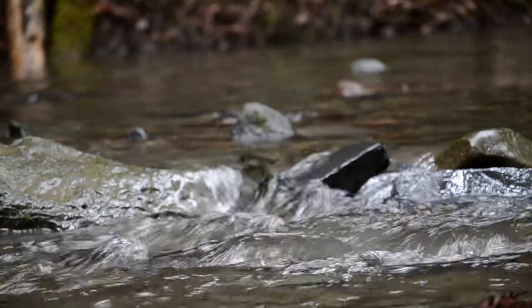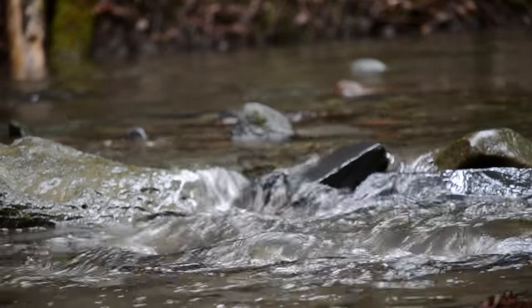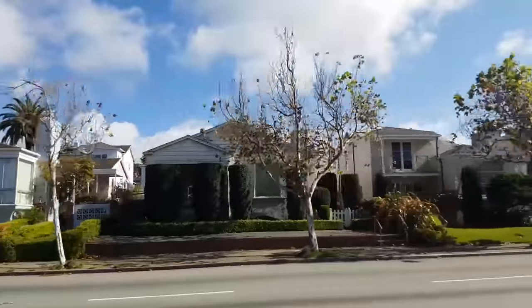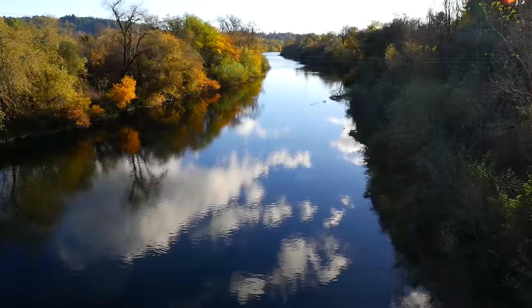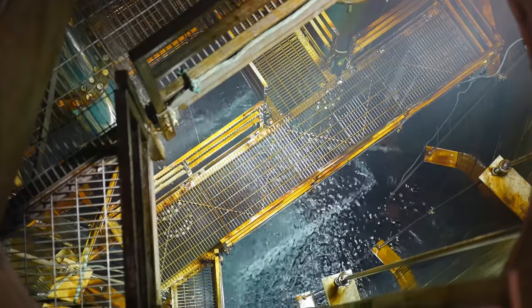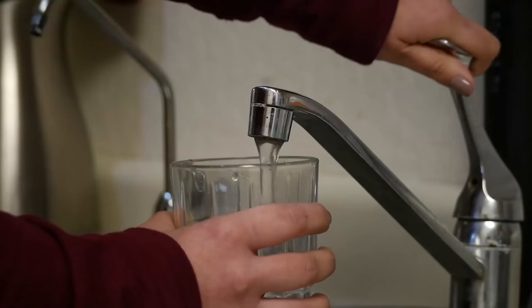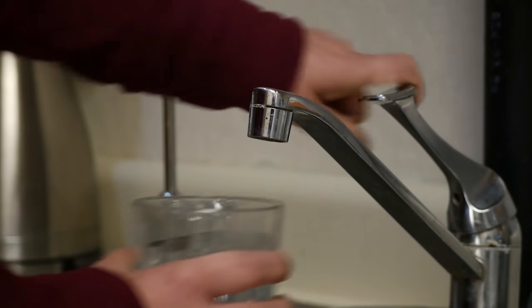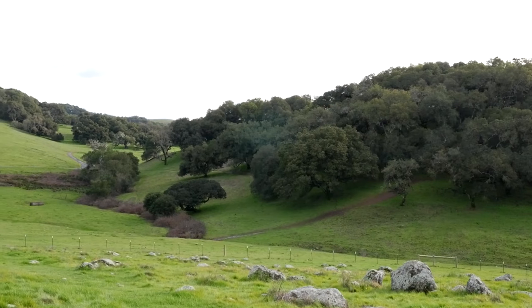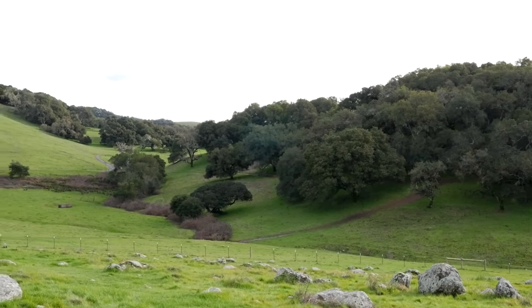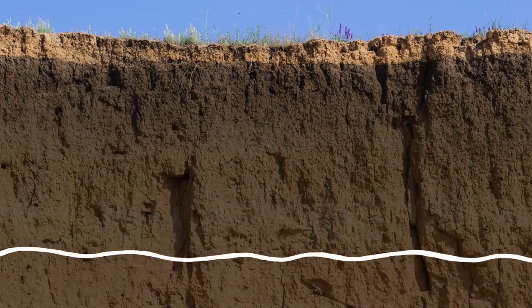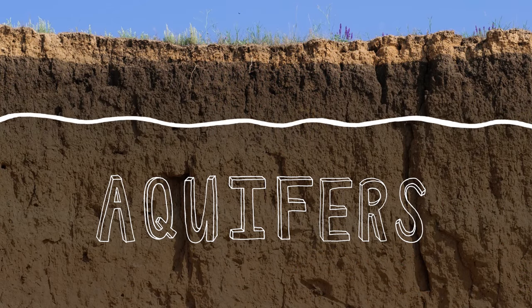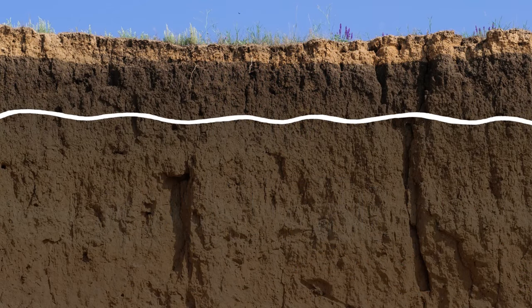Most people get their water from one of two places. City water is usually taken from surface water resources, treated, and piped to your tap. But if you live in an unincorporated area, you might be getting your water from a smaller on-site well. This water is from underground aquifers, also called groundwater.